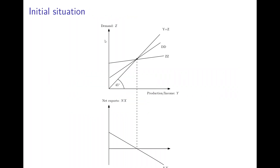How can we analyze this graphically? We have here the goods market diagram for the open economy, where we have demand on the vertical axis and production/income on the horizontal axis. We have the 45-degree line along which equilibrium must be located, the domestic demand curve, and the total demand curve for domestically produced goods.